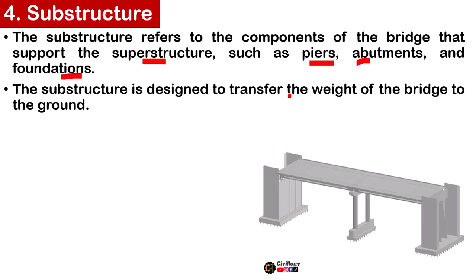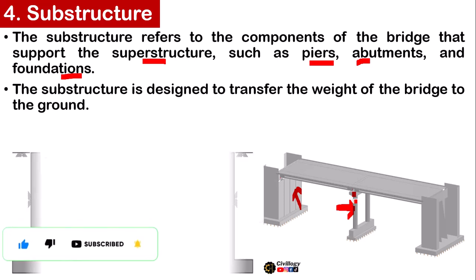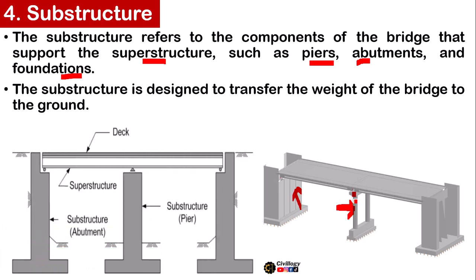As you can see in this picture, this is called an abutment and this is called a pier. We will discuss these components on upcoming slides. The pier is a part of the substructure, and the abutment is also part of the substructure.